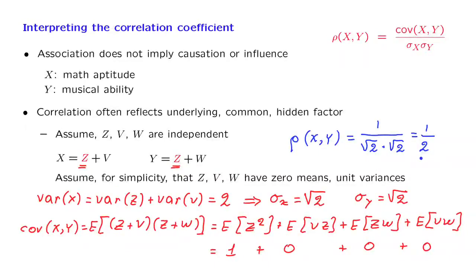This example also serves to give you a rough idea of what it may mean to have a correlation coefficient of 1 half. It means that the two random variables have some common elements and they also have some idiosyncratic elements. And these two elements are roughly equal in weight.